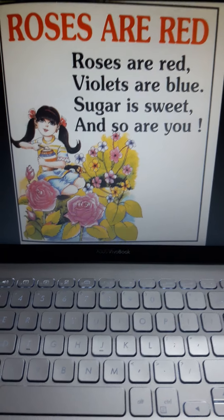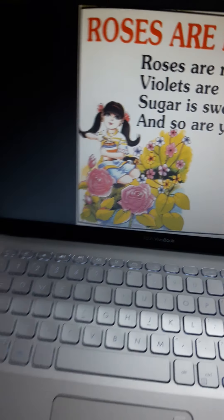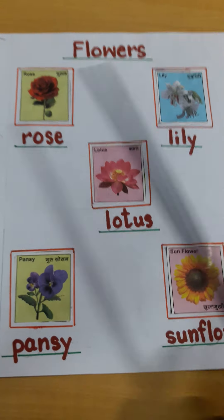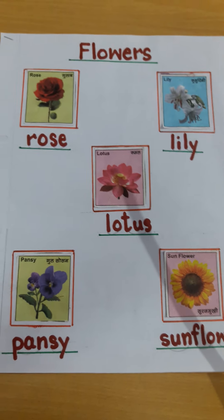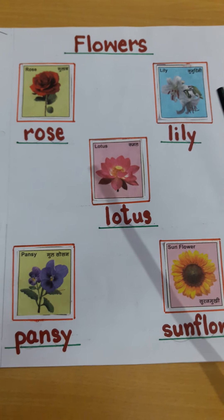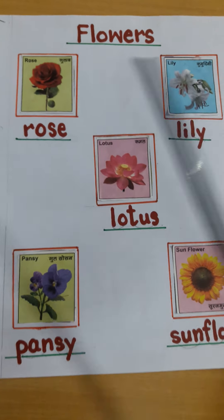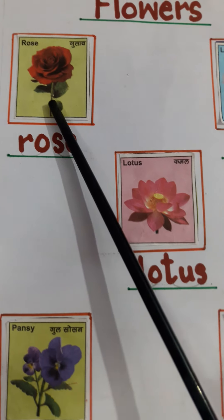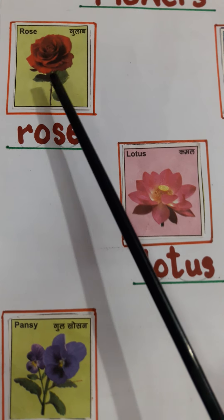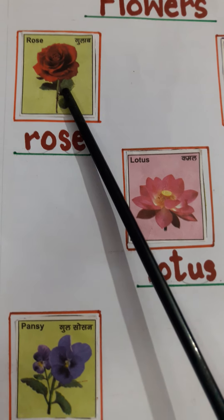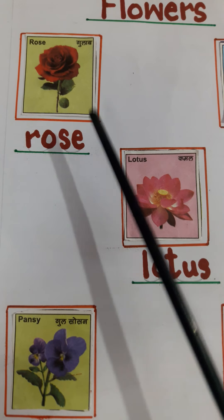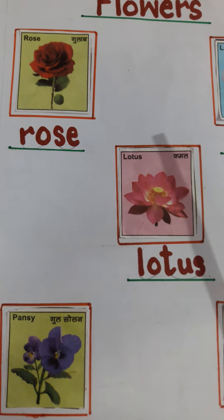Children, you remember this poem. Chaliye, abhi hum log flowers dekhte hai. Yahaan five flowers hai. Isko hum log achhi tarah se aaj learn karenge. Now first, kya hai? Dekhiye thik se. This is rose.